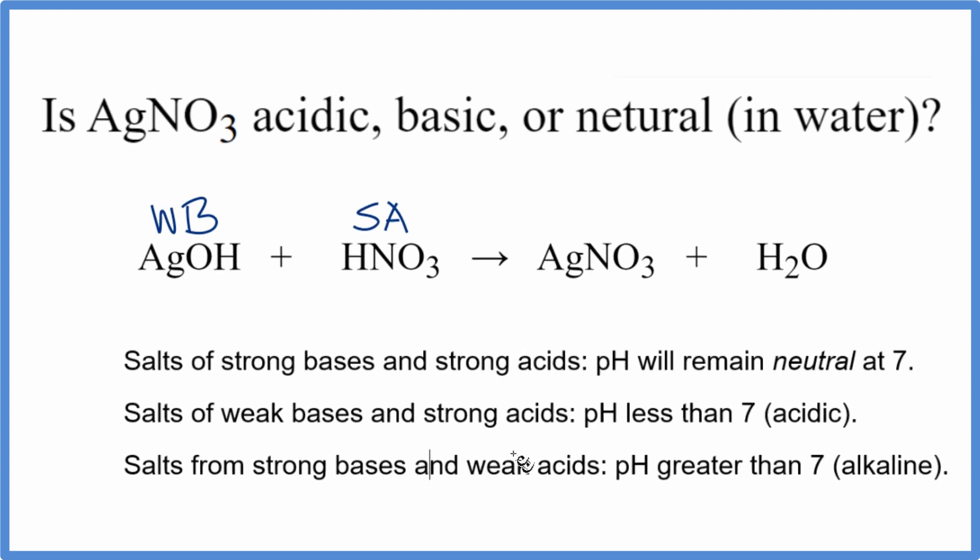Now we can use the rules. So if we have a weak base and a strong acid, the resulting solution should have a pH less than 7. So it should be acidic.